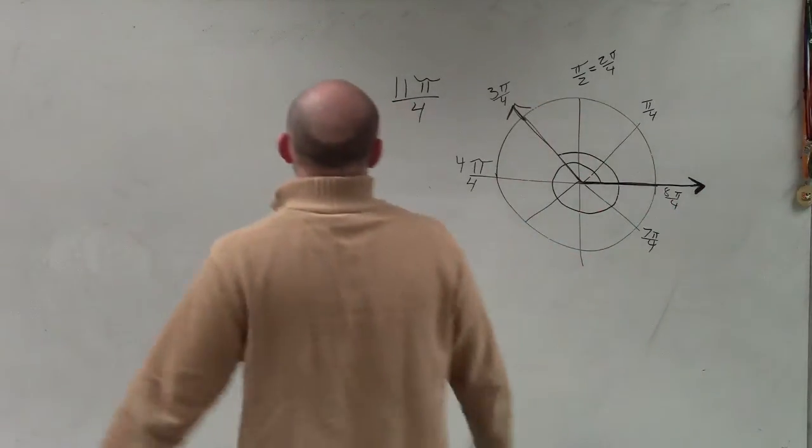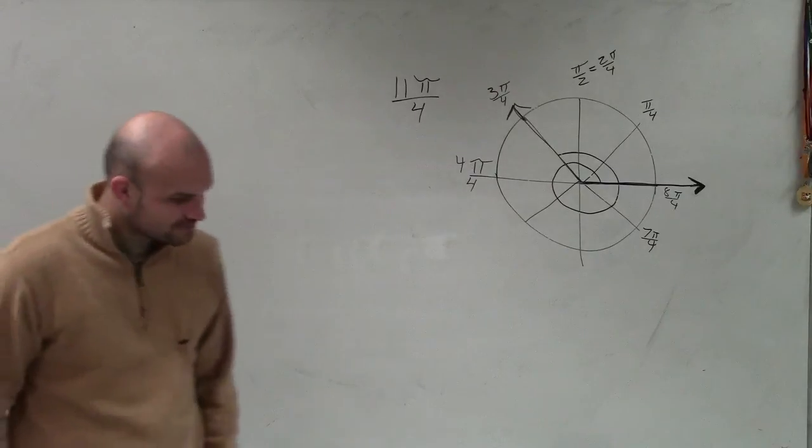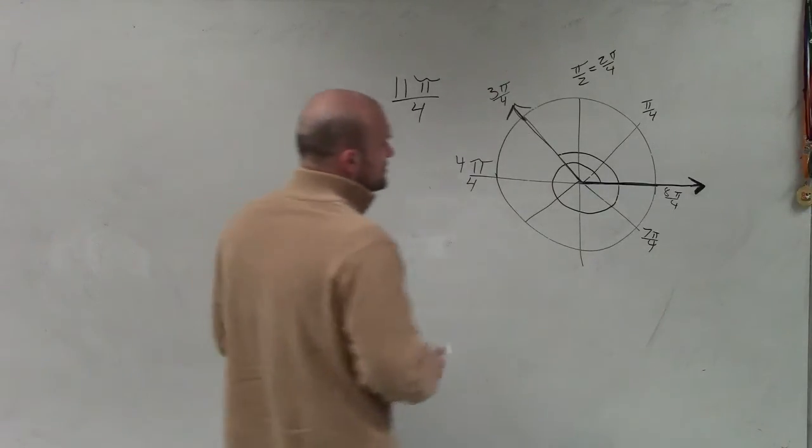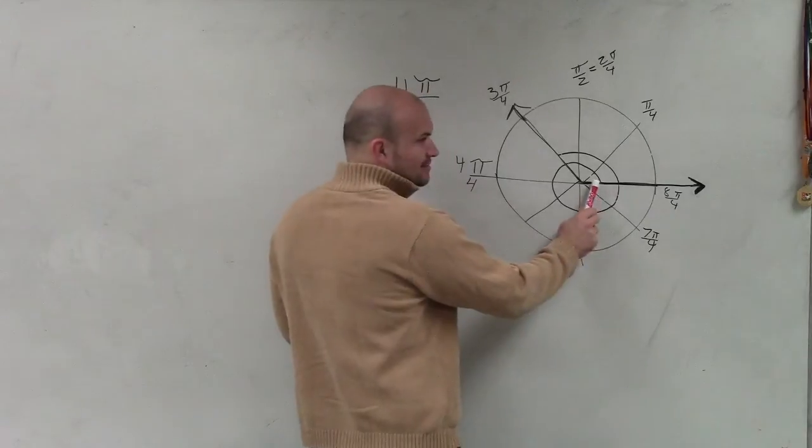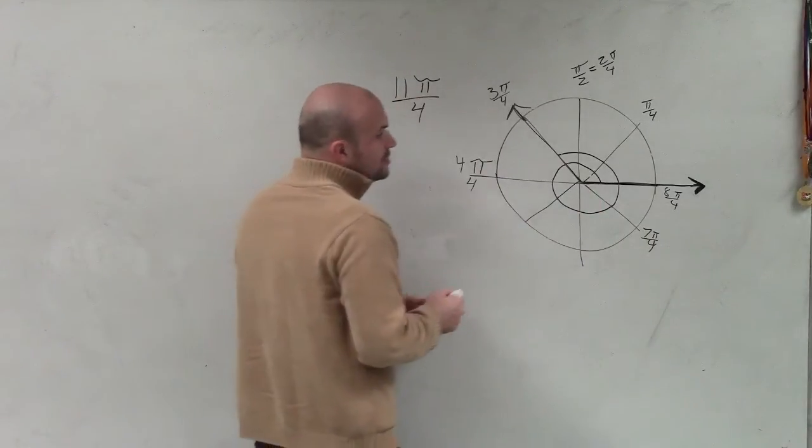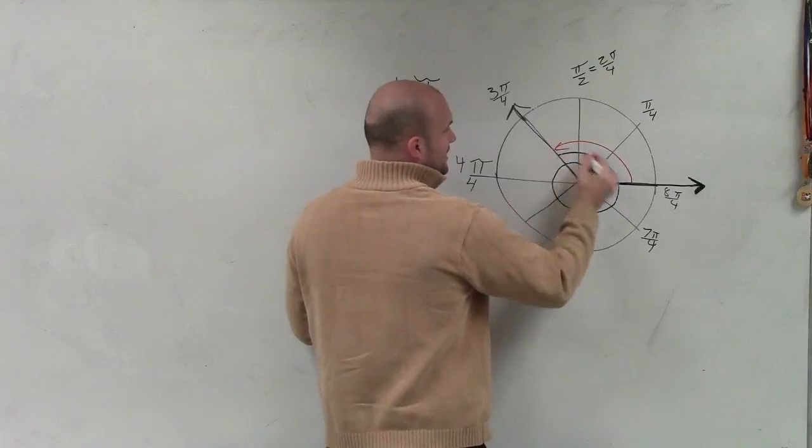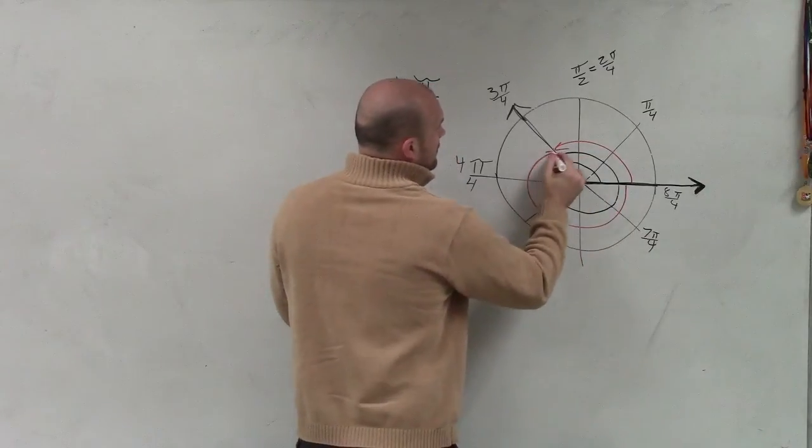So we want to go ahead and determine our coterminal angles, 11 pi over 4. So I'm going to show you two different angles. Now remember, we started here, right? So that's your initial side, that's your terminal side.